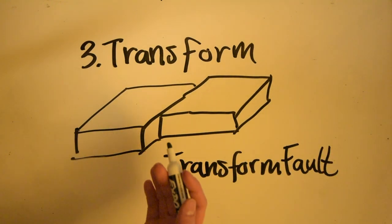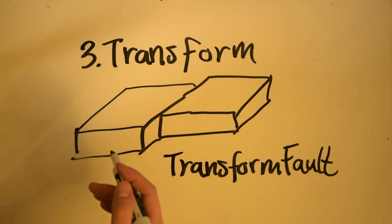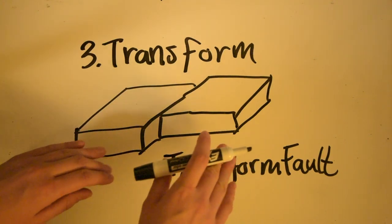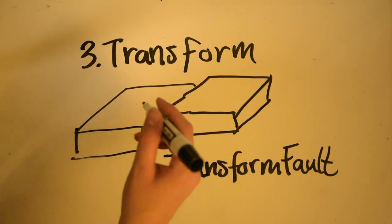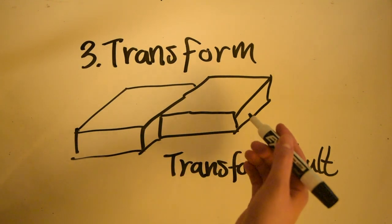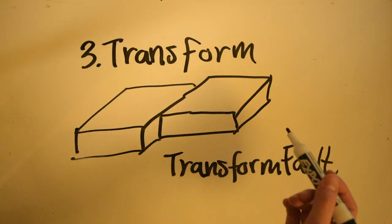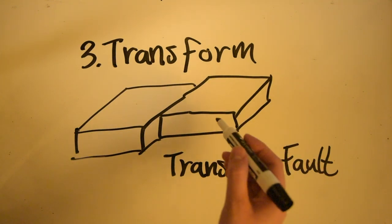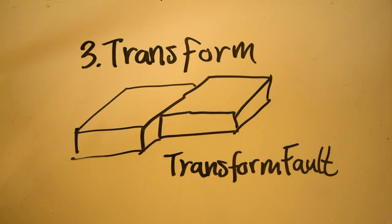And the most interesting part of this transform fault is that when these slabs of rock slide past each other, they often create earthquakes. An example of one of these transform faults or transform boundaries is the San Andreas fault along the coast of California.